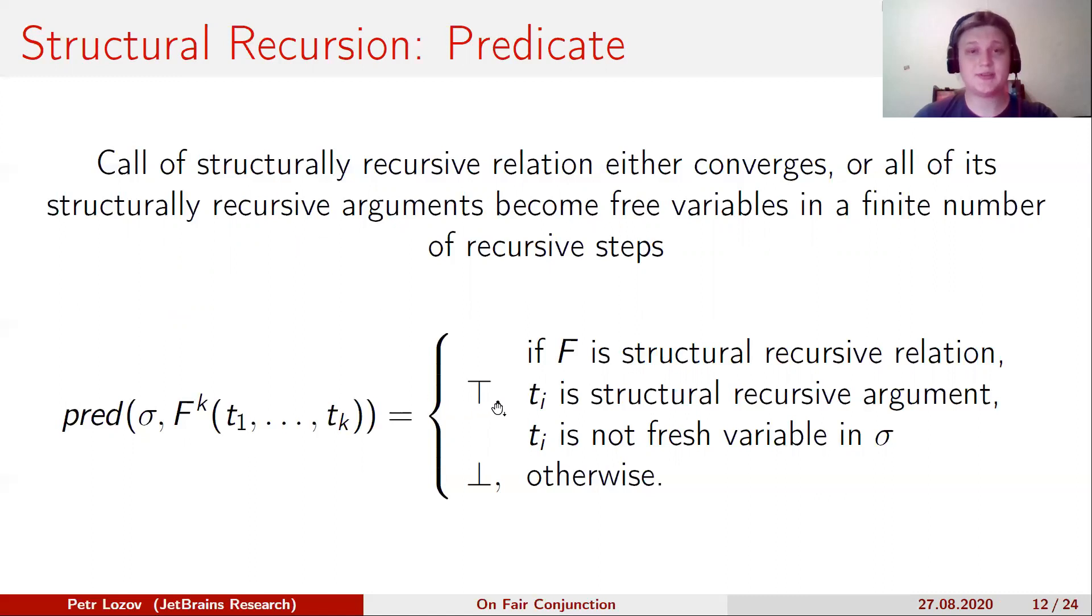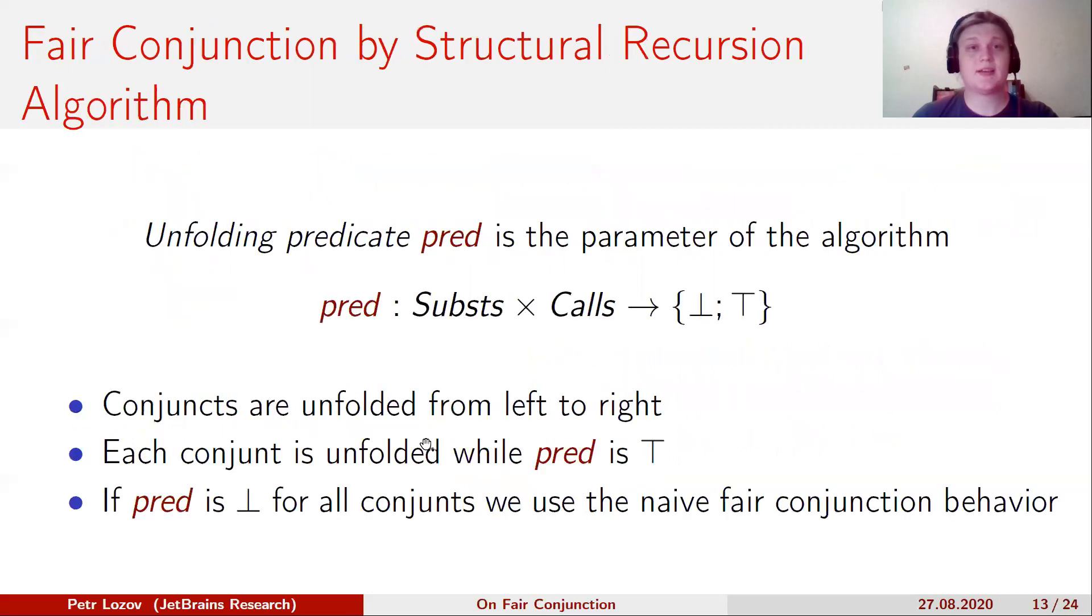This is what we will use as a predicate. We will switch conjuncts when all structurally recursive arguments of the current conjunct become free variables.